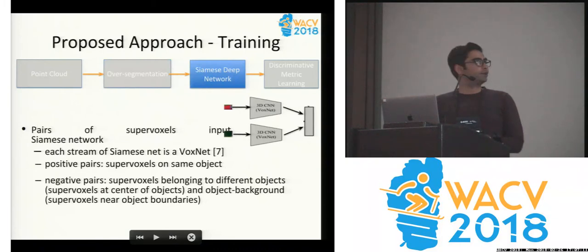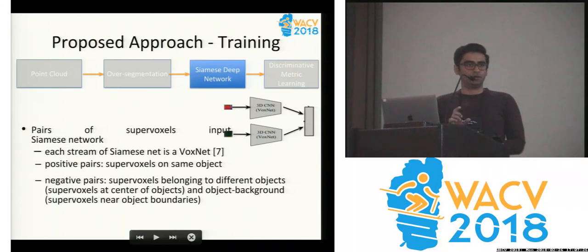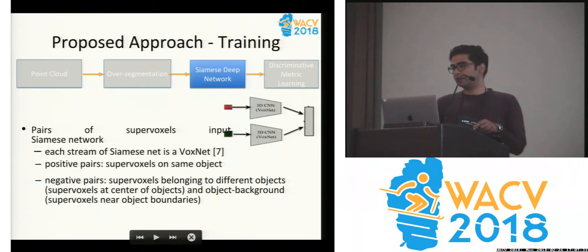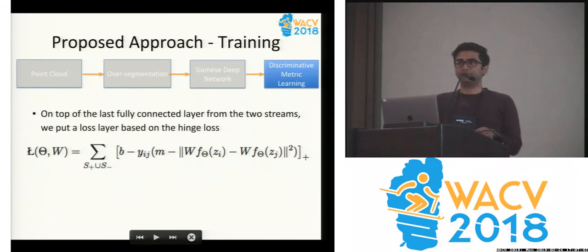We set up a Siamese network with these super voxels as inputs. The Siamese network works directly with 3D data — it is a 3D CNN — and it takes pairs of these super voxels. The pairs are of two types: positive pairs where they belong to the same object, or negative pairs where they are on two distinct objects or one is on an object and another is on the background. On top of it, we put a discriminative metric learning framework which encourages the positive pairs to be closer in the embedding space and the negative pairs to be farther.